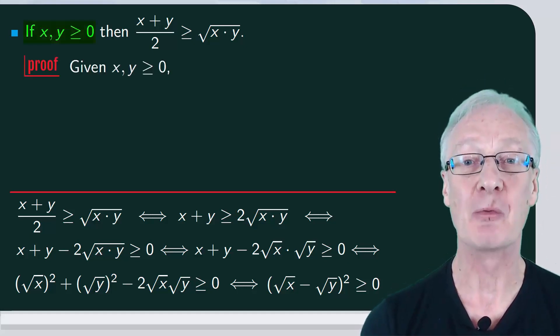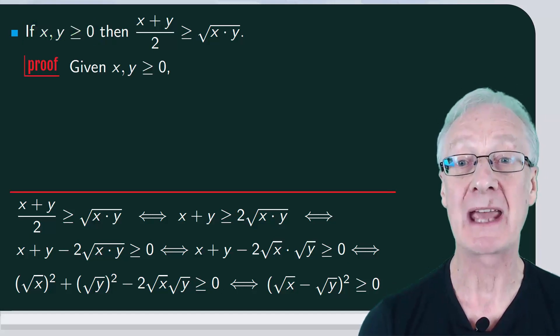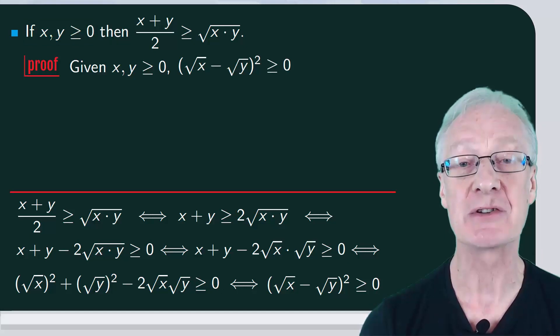Since both x and y are greater than or equal to zero, we can take their square roots, and then we have that root x minus root y squared is greater than or equal to zero, because it's the square of a real number.